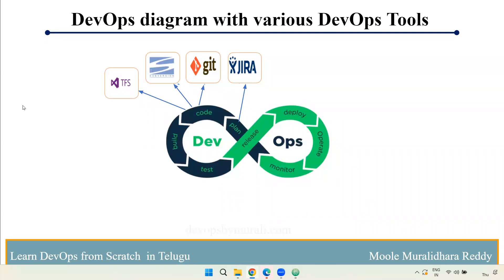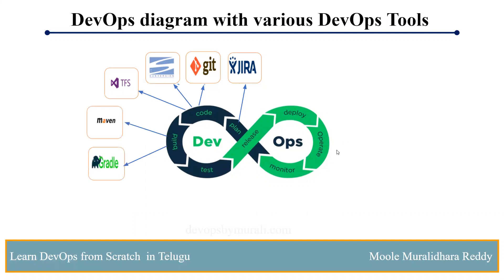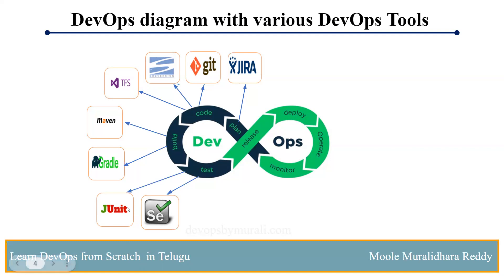The next thing is build tools. We have multiple build tools: Maven, Gradle, and Ant. Ant doesn't get used much anymore. The majority of projects use Maven and Gradle. For Java-based applications, 99% of projects use Maven, so we will focus on Maven. The next thing is testing tools — JUnit and Selenium. Testing tools are managed by a different team, but it's good to know about them. The majority of projects use Selenium for automation testing.